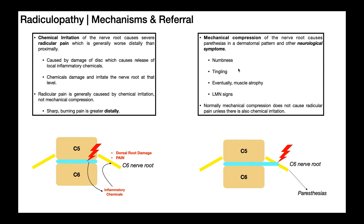We're also going to potentially have weakness in a myotomal pattern. The C6 myotome specifically is elbow flexion and wrist extension — those are two areas where you might see weakness. The ventral root comes off of the spinal cord and runs with the dorsal root, sending motor output to skeletal muscles. Not every muscle has equal contributions from each nerve root, but there's a very high contribution from the C6 ventral root in the biceps brachii and the wrist extensors. So you might have weakness in those muscles — really anything with a significant contribution from the C6 ventral root. That would be weakness in a myotomal pattern.